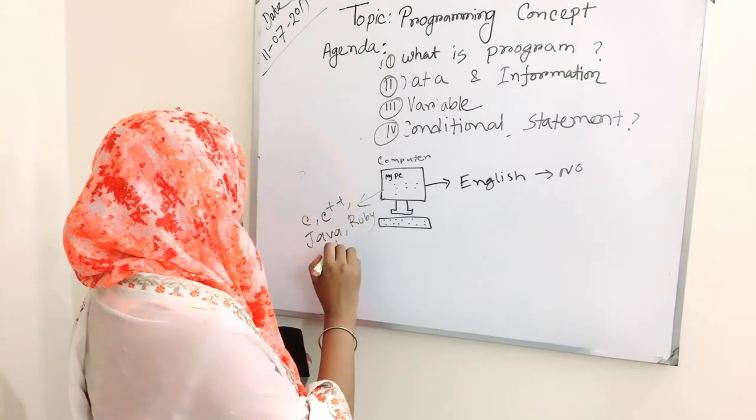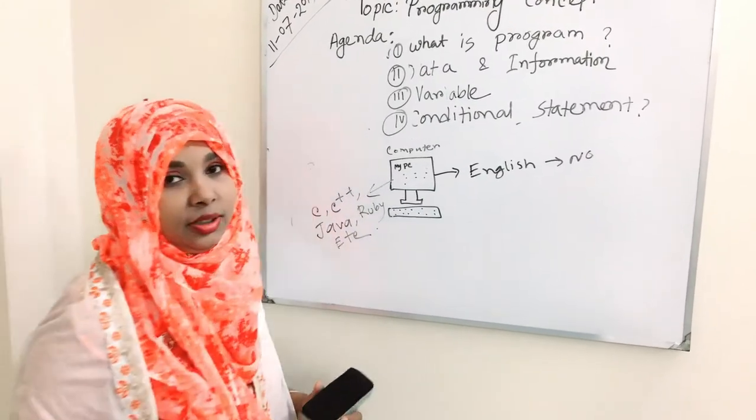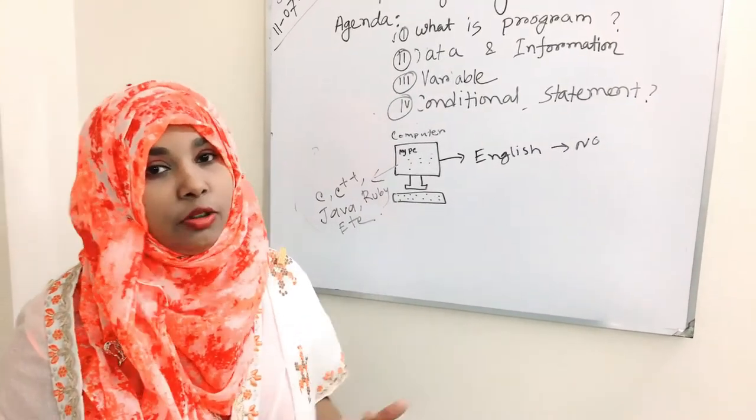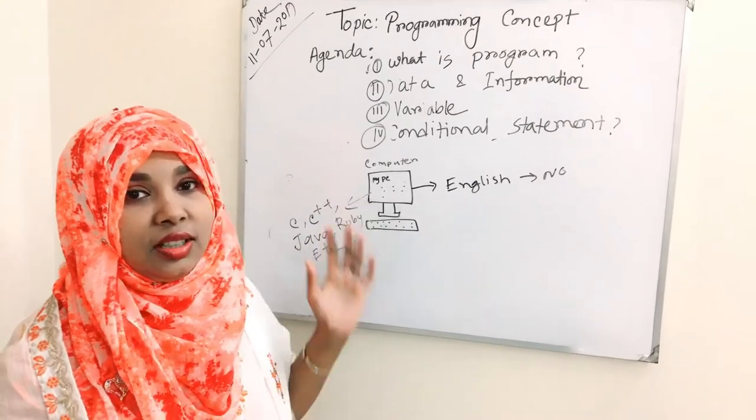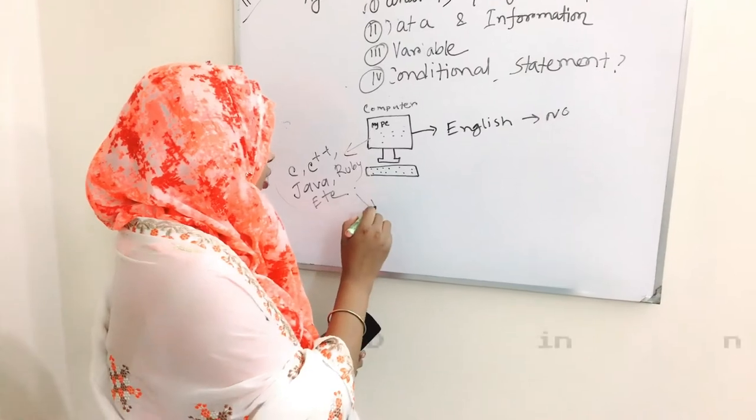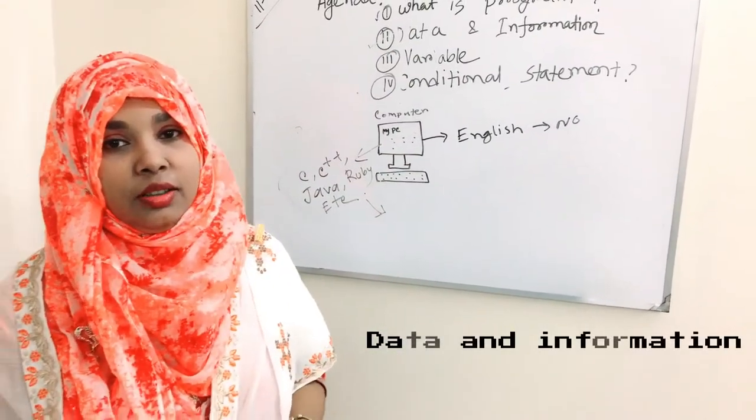They can only understand these languages. So if you want to do anything by your computers, you have to learn these languages. These are called programming languages. Firstly, you have to know about data and information. It is the basic of programming language.